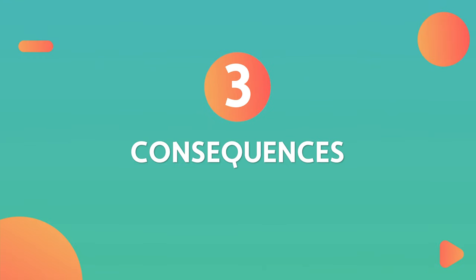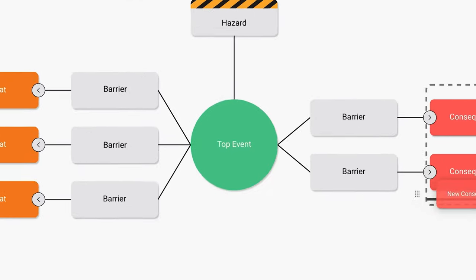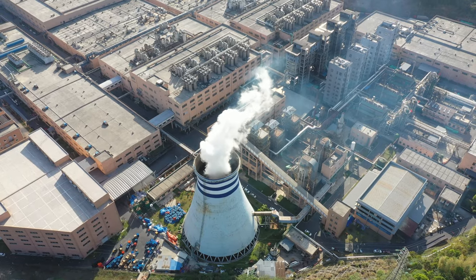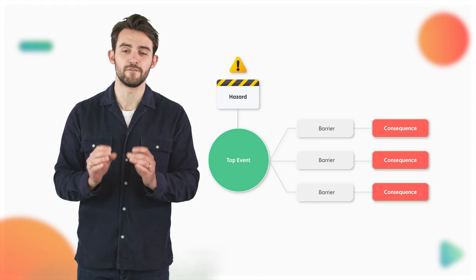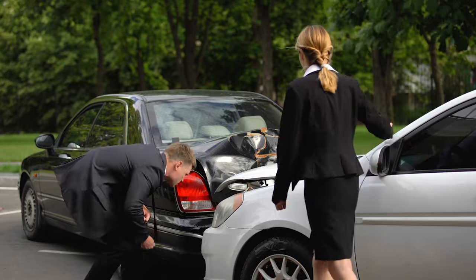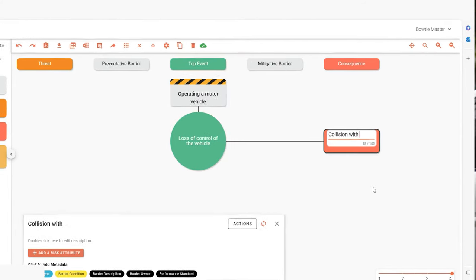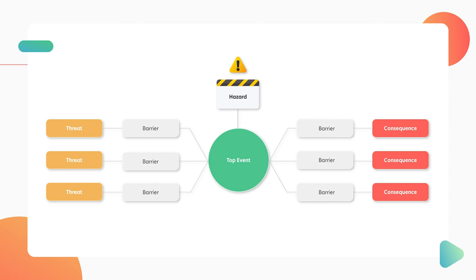Which brings us nicely on to number three: consequences. Consequences represent the undesirable outcomes that could result from the top event. These can range from environmental damage to injuries, damaged reputation, or even loss of life. Identifying and understanding potential consequences is crucial for effective risk management. In road safety, one of the consequences could be a collision with an object or another vehicle. In a bowtie, these are placed on the right-hand side. But what's on the left?